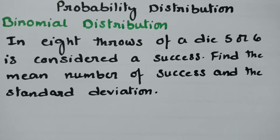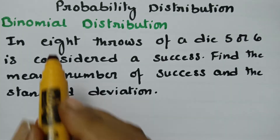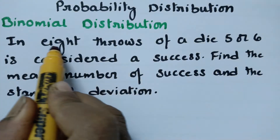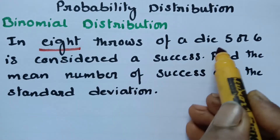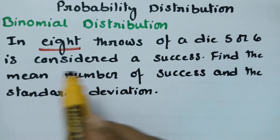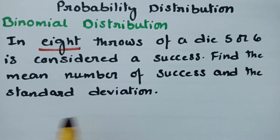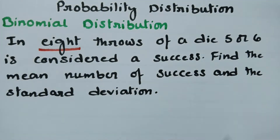This video is on binomial distribution, a topic from probability distribution. In 8 throws of a die, getting 5 or 6 is considered a success. We have to find the mean number of successes and the standard deviation.